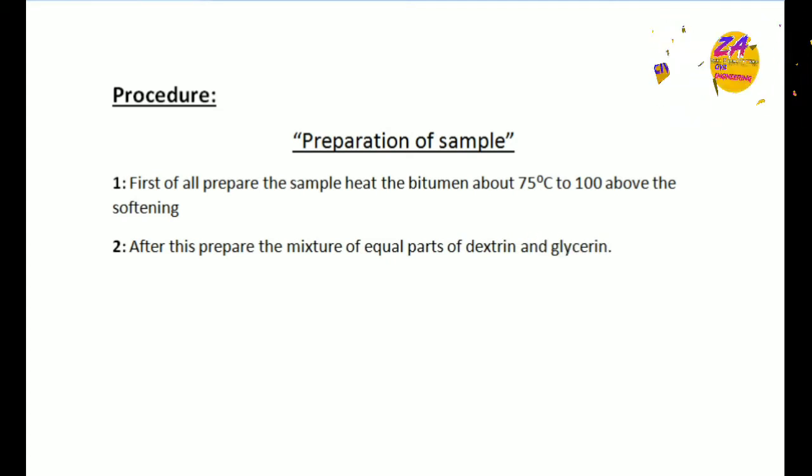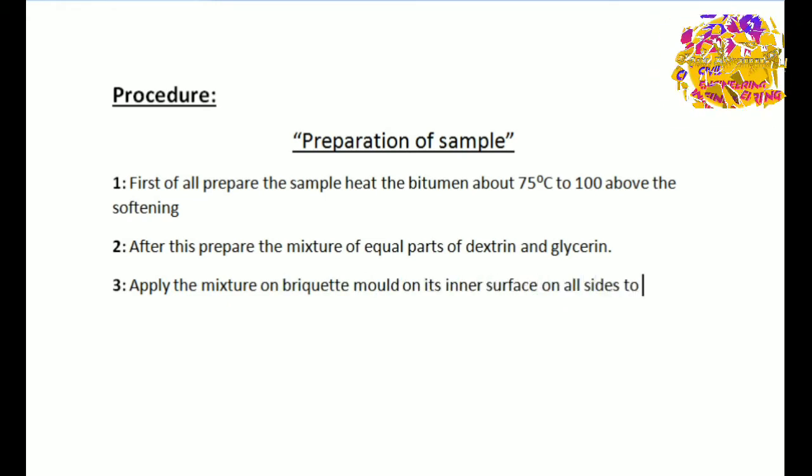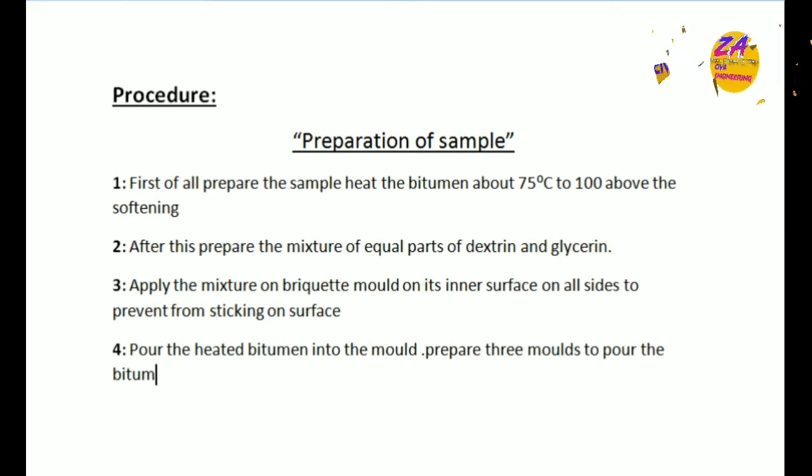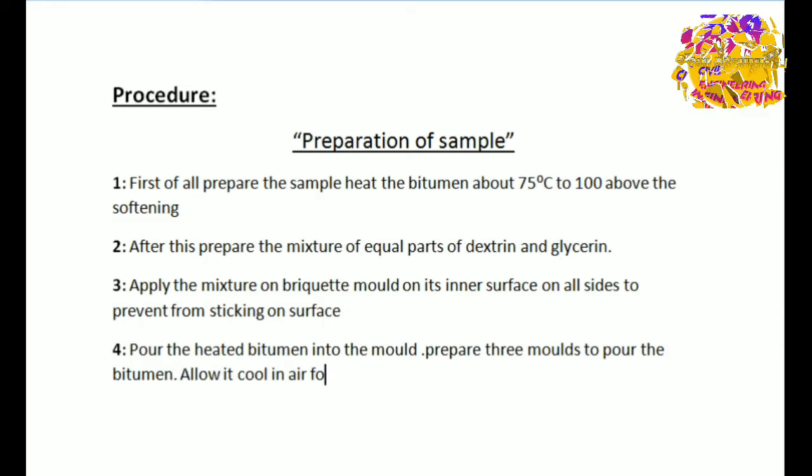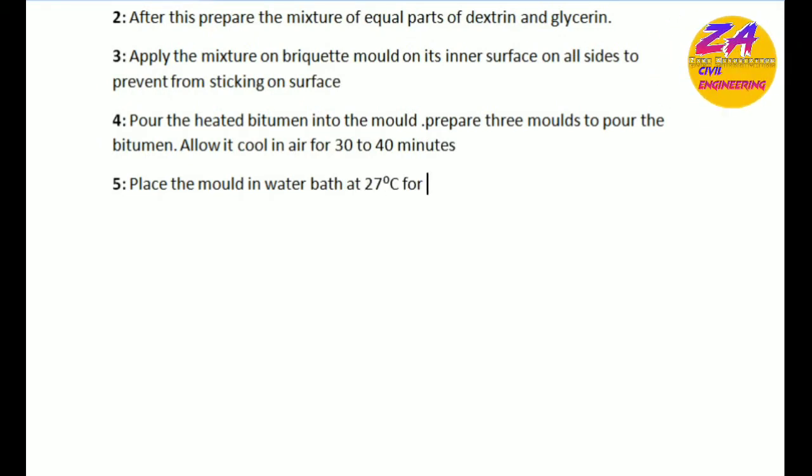Third, apply the mixture on the briquette mold on its inner surface on all sides to prevent sticking. Fourth, pour this heated bitumen into the mold—prepare three molds to pour the bitumen. Allow it to cool in air for 30 to 40 minutes. Then place the mold in water bath at 27°C for 30 minutes.